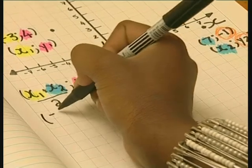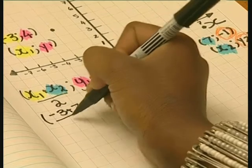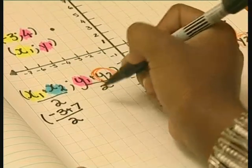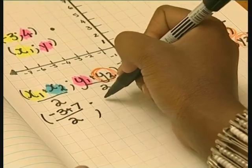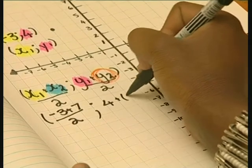Then I substitute into the formula. So, x1 is negative three and x2 is seven. And y1 is four and y2 is negative one.